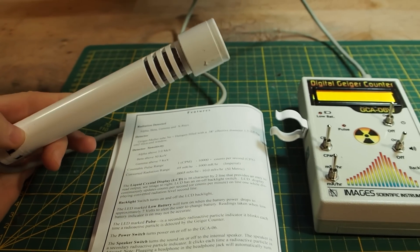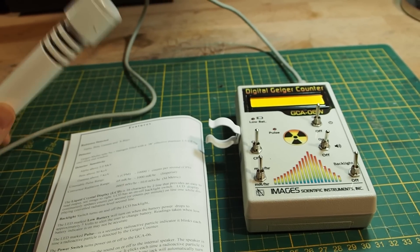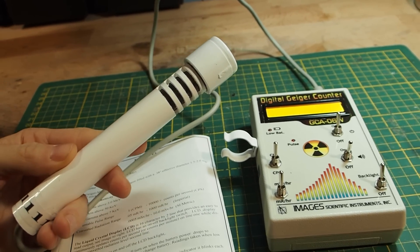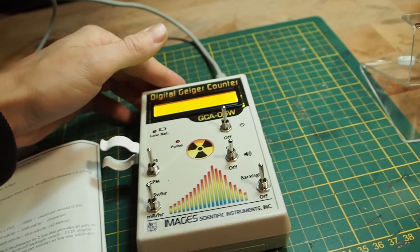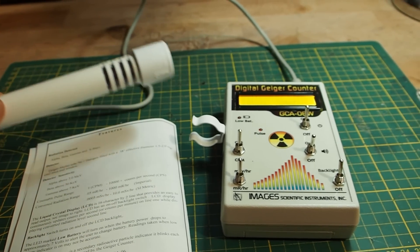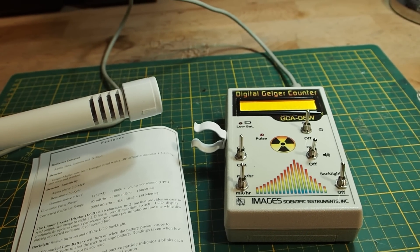Also the Geiger counter comes with this wand here and I like that because if there's something broken inside you can always get another wand and connect it to the Geiger counter so you don't have to throw away the entire device.